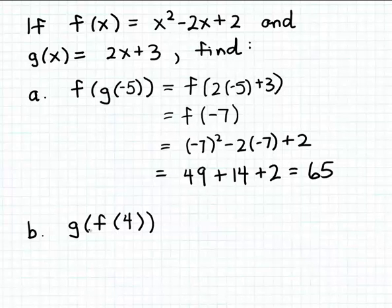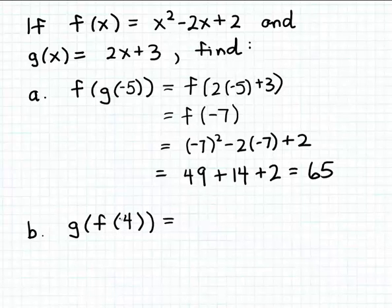Let's try the same process but sort of backwards. We want to evaluate g of f of four. So first we're going to evaluate f at the input four, and then feed that output as input to the function g — using the output from one function, in this case f, as input to the second function g.